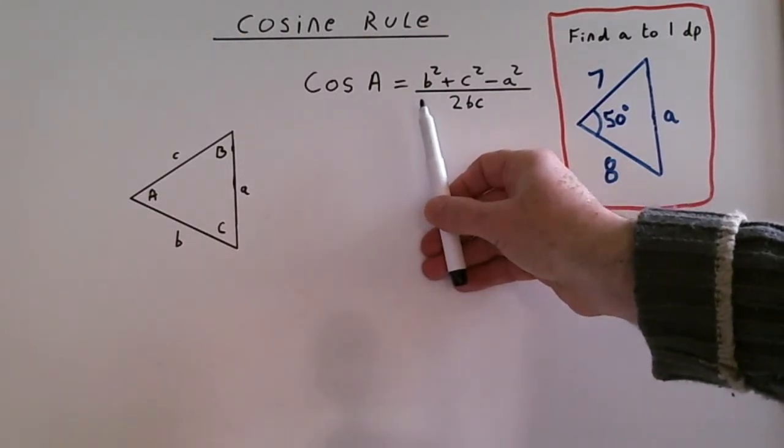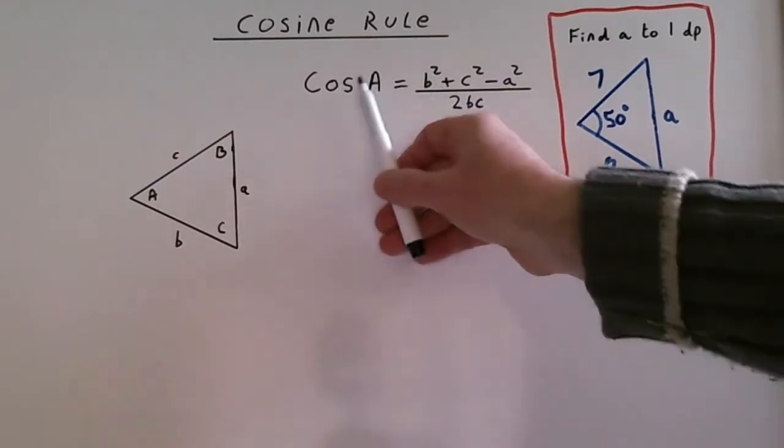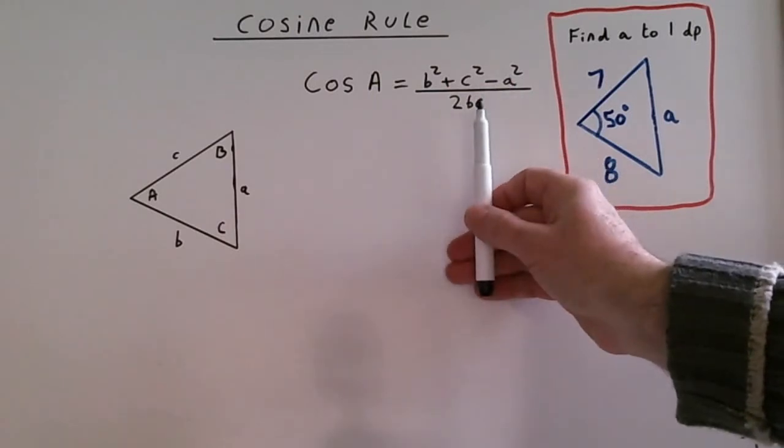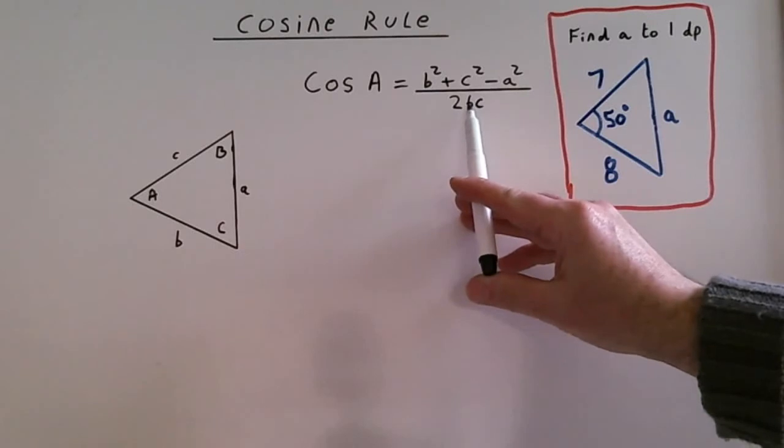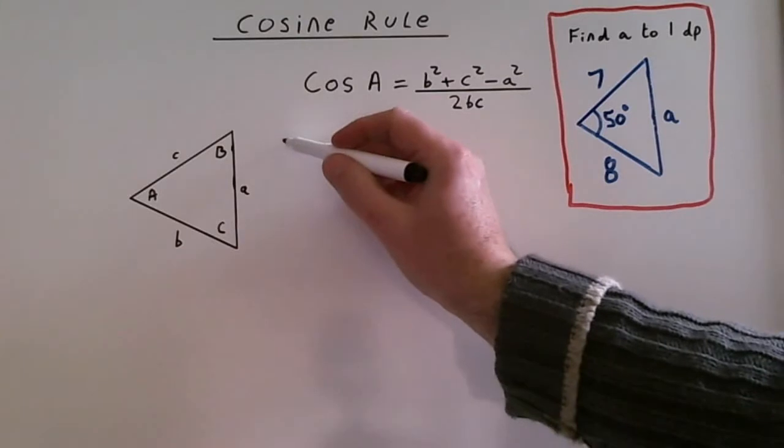What we're going to do is first of all, we can't use this formula as it is because it's got cos A. We want to make a the subject, so we've got to move it around for a. What we're going to do is times both sides by 2bc, and that will get rid of it from this side.